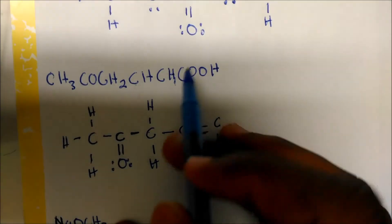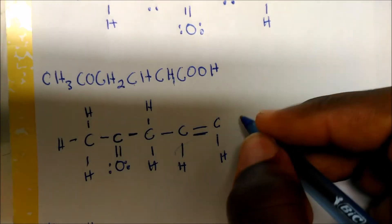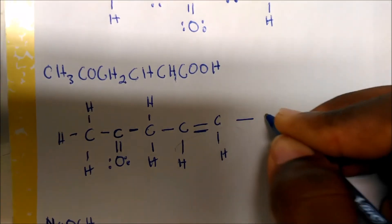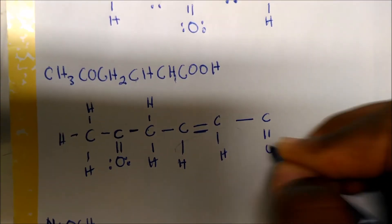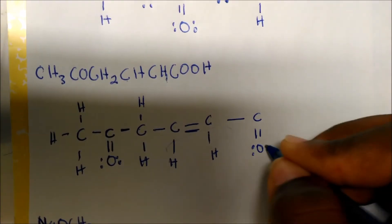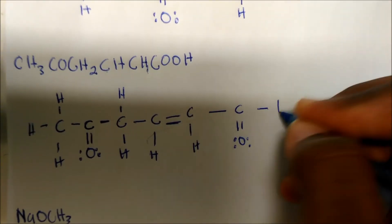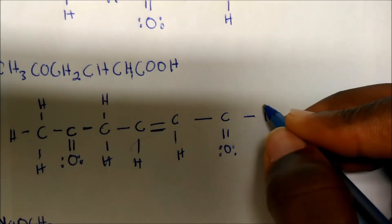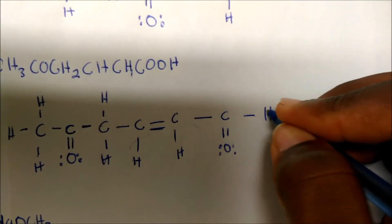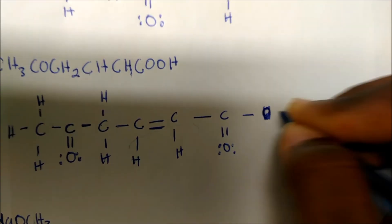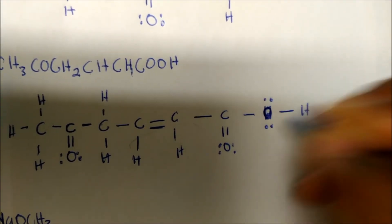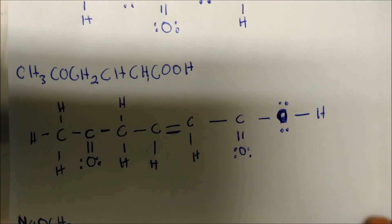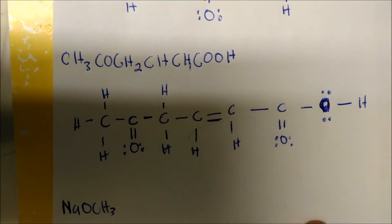This is a carboxylate group, which you guys will learn. So I'm going to have a carbon double bonded to an oxygen, which is also bonded to another oxygen, which is bonded to a carbon. That will be the Lewis structure for that.